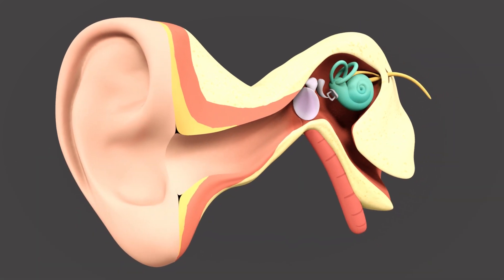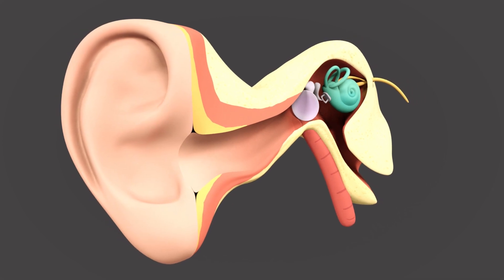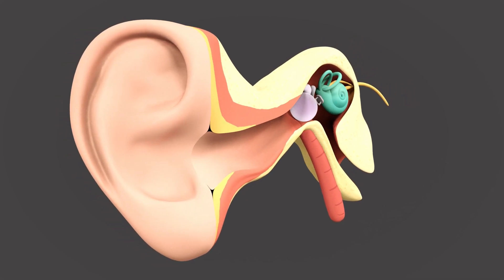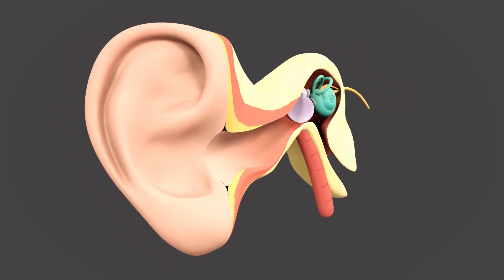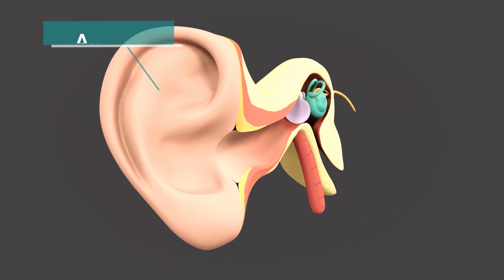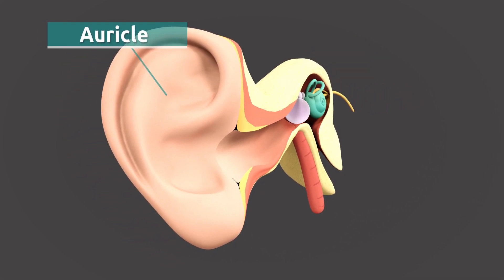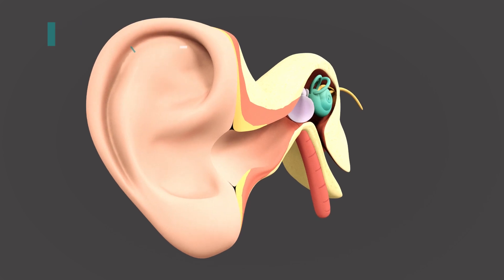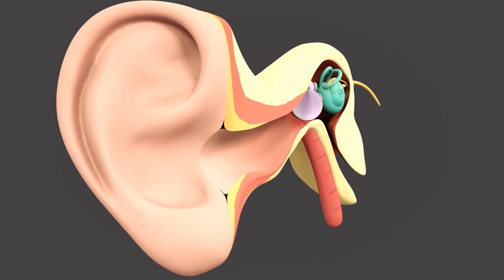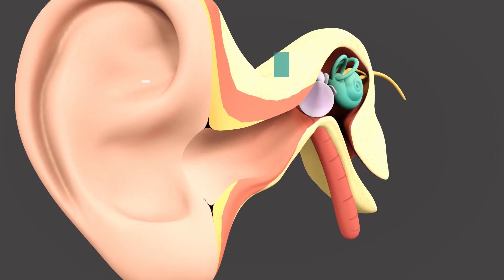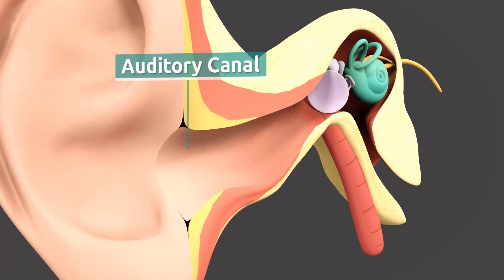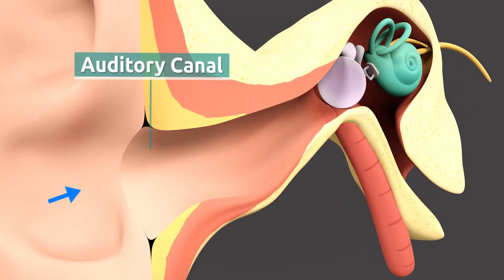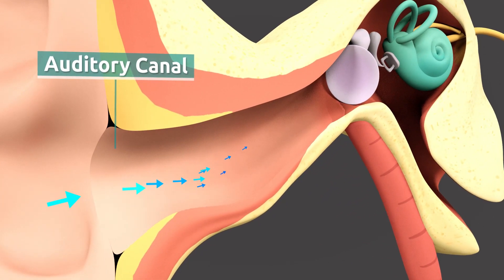The outer ear is made up of two parts: the auricle, which is the part of the ear that captures sound waves, and the auditory canal, through which sound travels to reach the middle ear.